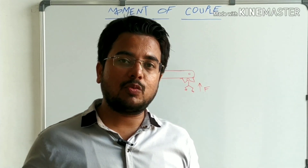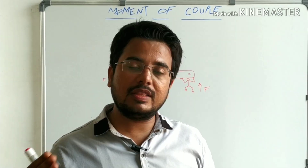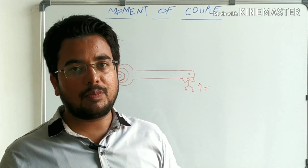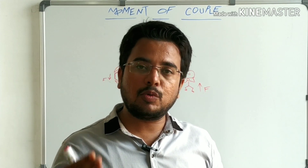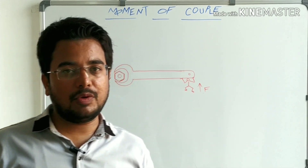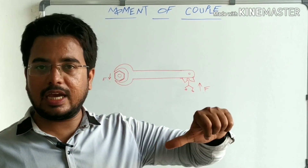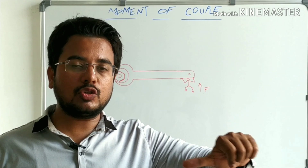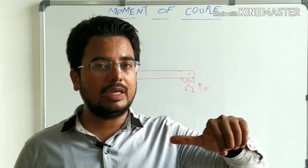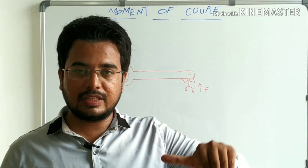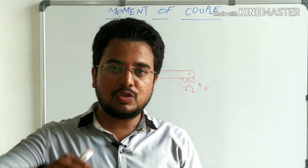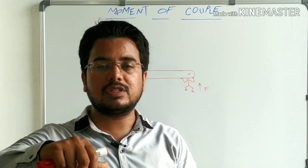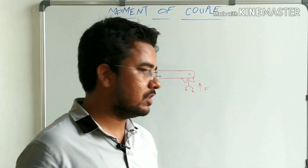Sometimes we require a large turning effect; in those cases we need to apply equal and opposite forces. For example, a tap — we need to apply forces of equal magnitude but in opposite direction by our thumb and finger. Another example: to open a bottle cap, we need to apply equal and opposite forces.